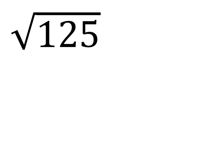Start over. All right, the square root of 125, it's 25 times 5.